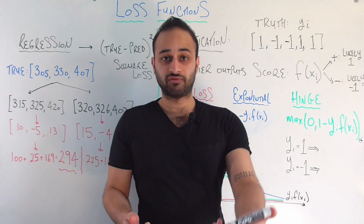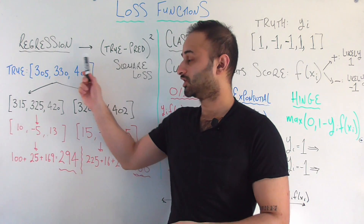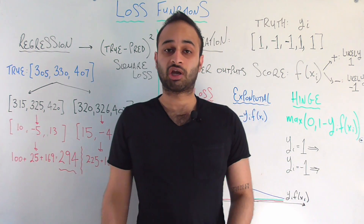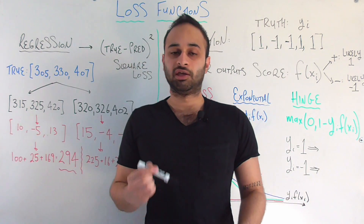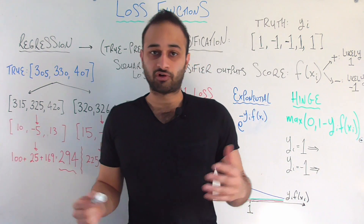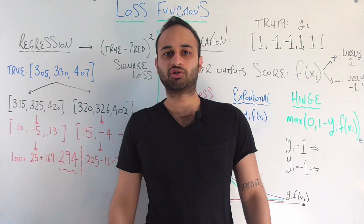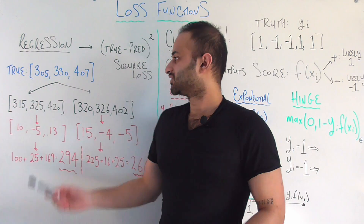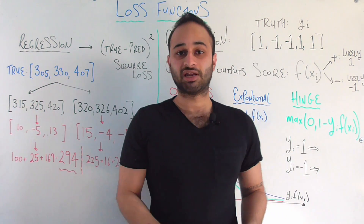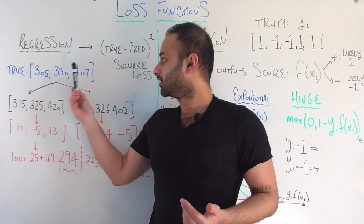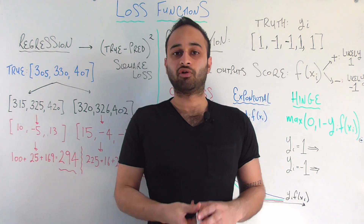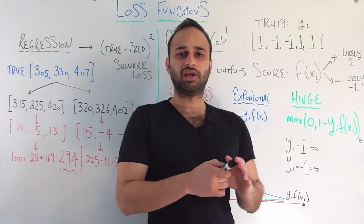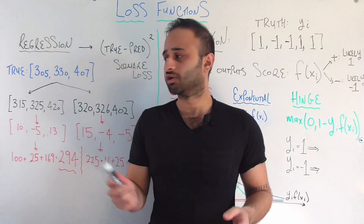In this video we'll first spend a little time talking about loss functions in regression — just the biggest one — and then spend the bulk of the video talking about loss functions in classification. For regression, let's give a small real-world example: we're trying to predict how many minutes it will take someone to finish running a marathon. Let's say we have three people in our training set who finish in 305, 330, and 407 minutes respectively. Our model is trying to get as close to these numbers as possible.